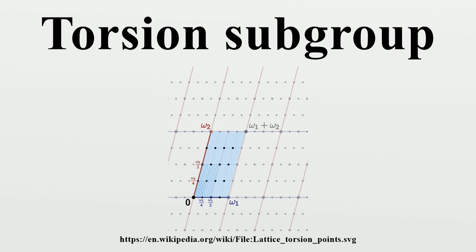For any abelian group and any prime number p, the set A[p] of elements of A that have order a power of p is a subgroup called the p-power torsion subgroup, or more loosely, the p-torsion subgroup. The torsion subgroup T is isomorphic to the direct sum of its p-power torsion subgroups over all prime numbers p.